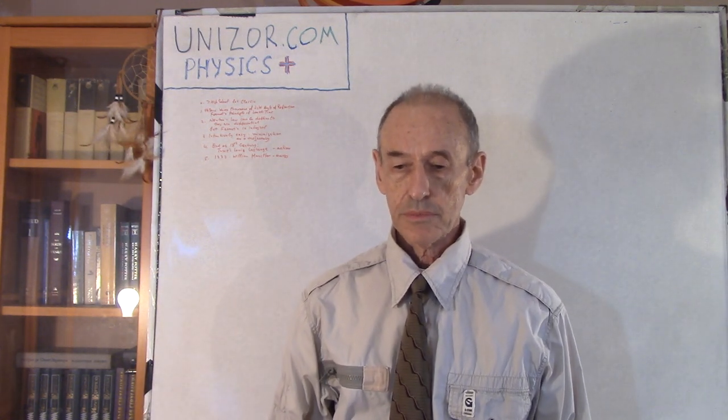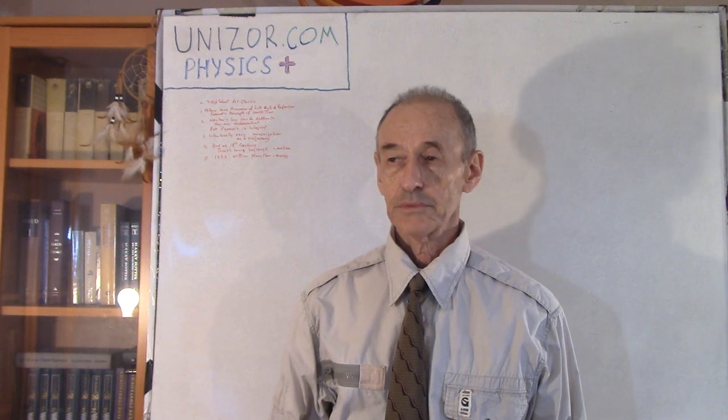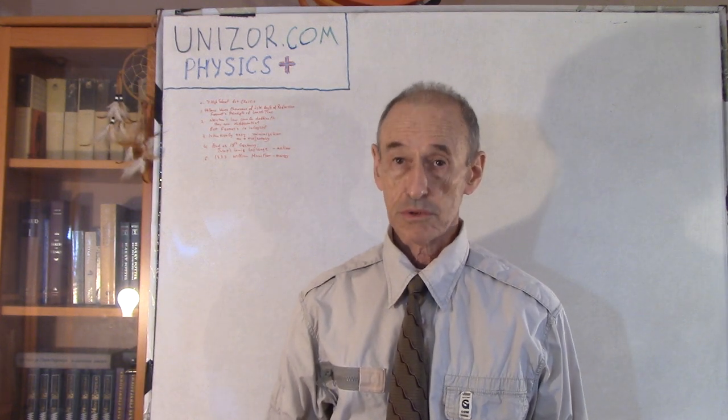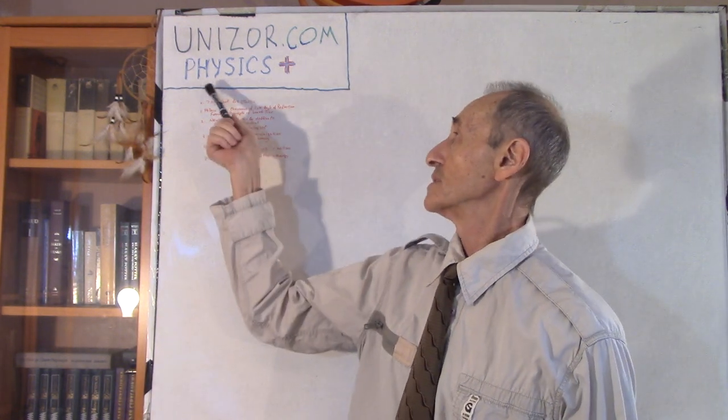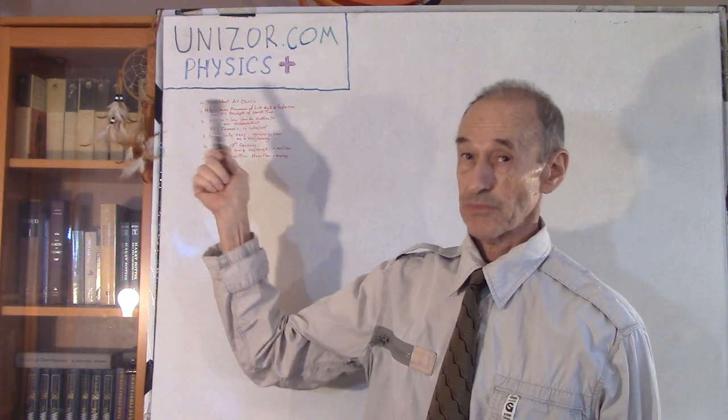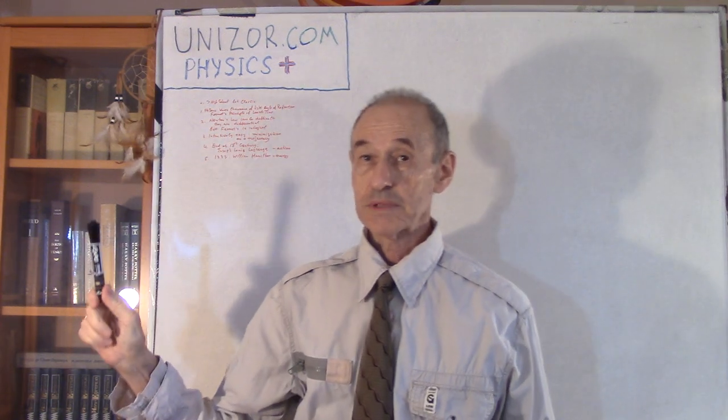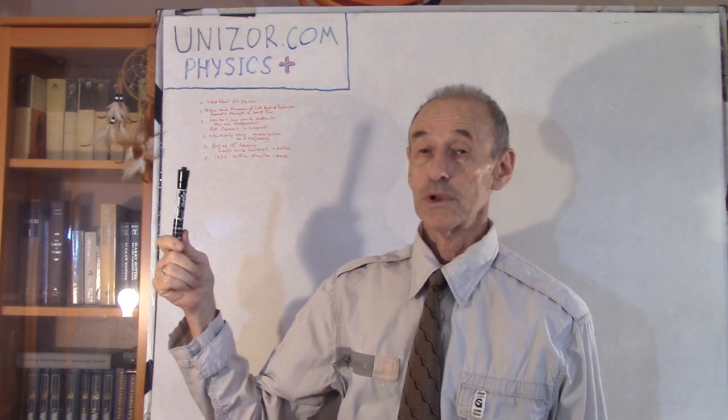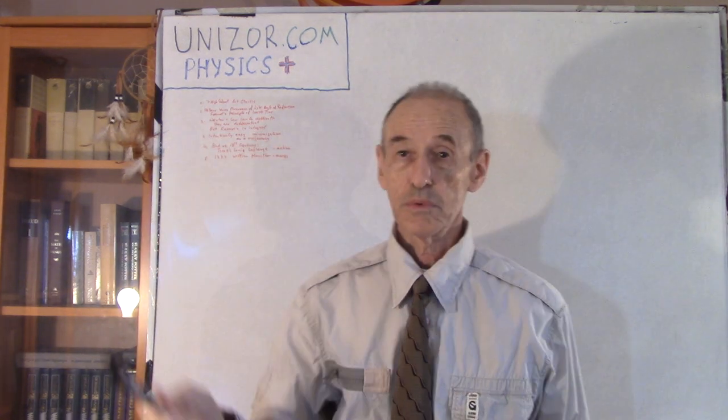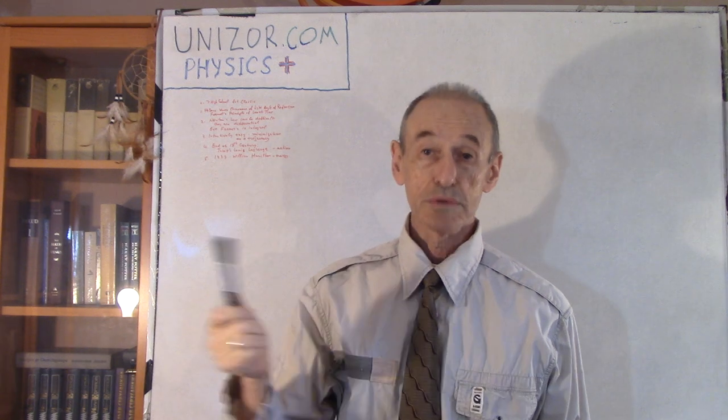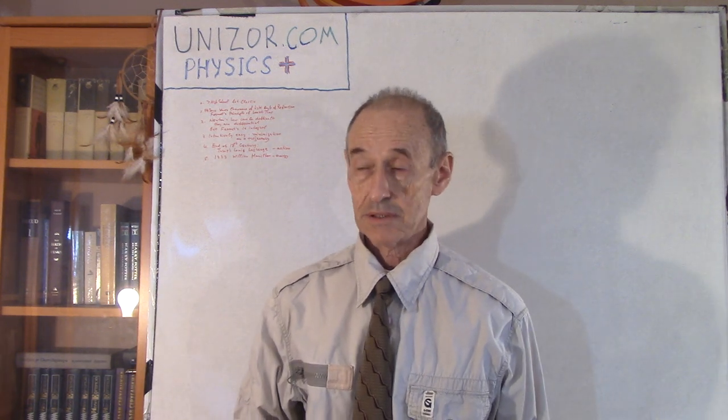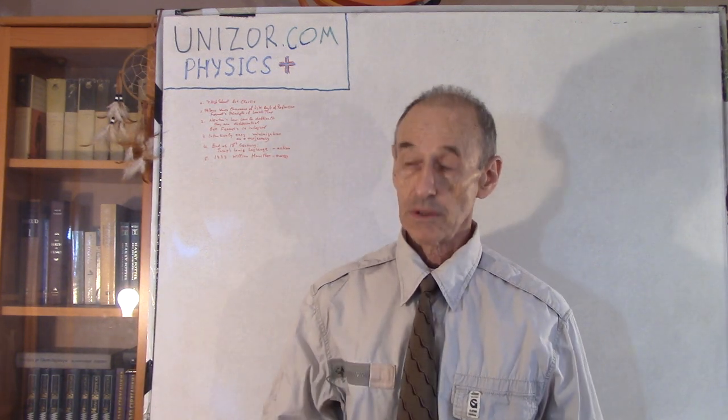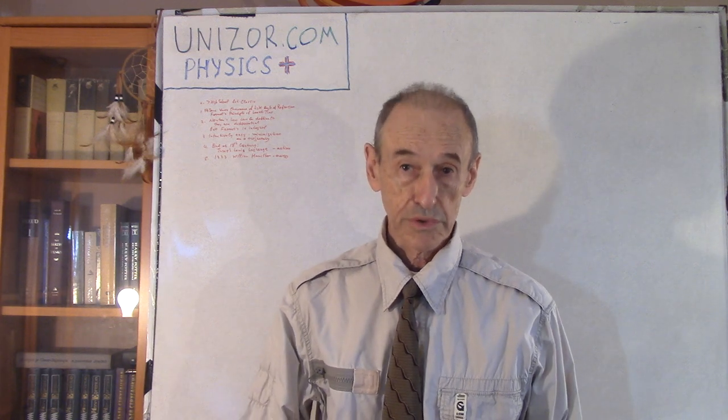On Unizor.com there are other courses as well. First of all, there are a couple of prerequisite courses. One is Physics for Teens and Math for Teens. Both are absolutely mandatory before you do anything with Physics Plus or there is actually Math Plus as well. And there are other courses like Relativity for All, for example.